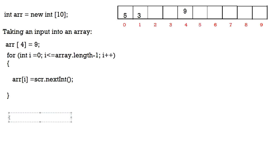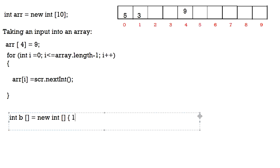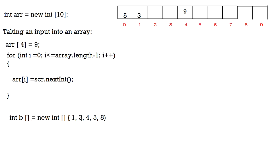The third way to take input into an array is as follows. I'll take another array of type int called b. The difference from the previous declaration is that there's no value written for length — the bracket is empty. This line creates an array called b of type int and stores five values: 1, 3, 4, 5, 8 into the array. Since we have five values, the array automatically has a length of five, with values at indexes 0 to 4. In this case, we don't need to take separate inputs — they're already provided.